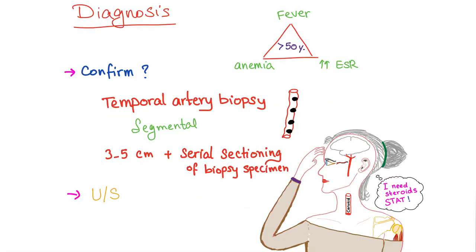How do you diagnose this condition? The triad is fever, anemia, and high ESR in an elderly woman — that's temporal arteritis. To confirm the diagnosis, you perform a temporal artery biopsy. However, the inflammation may be segmental, so you need a large segment of the artery — 3 to 5 centimeters — plus serial sectioning of the biopsy specimen to avoid missing any granulomas. Ultrasound can also be useful.